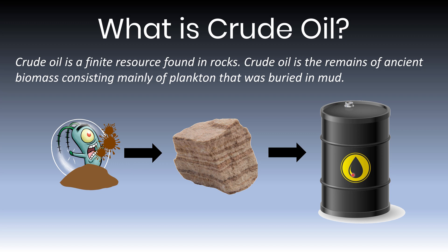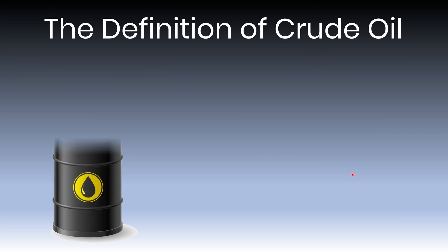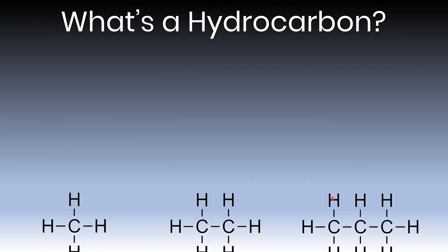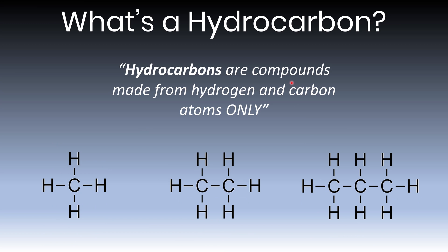Crude oil has a definition. The definition of crude oil is that it's a mixture of compounds called hydrocarbons, and you can see some images of hydrocarbons right here — every single one of these molecules is a hydrocarbon. Let's now explore what a hydrocarbon is. Hydrocarbons are compounds that are made from hydrogen and carbon atoms only. We can see in the images below that we have compounds made of both carbon and hydrogen but no other atoms, and therefore we can call them hydrocarbons.